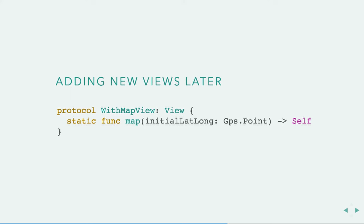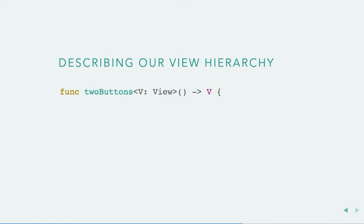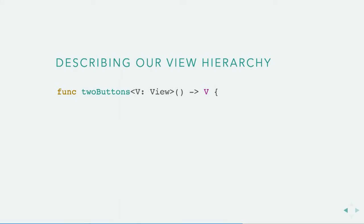From outside the library, we can make a new protocol WithMapView that conforms to View — it inherits the constraints of View and also provides an extra constraint: you must implement this map method. Now if we want to build a hierarchy, let's look at the two buttons first. This time we're going to use a function instead of a value, because we need to return a generic type V — we know V must be a View, so we say V: View. When we do that, Swift lets us use static methods on V.